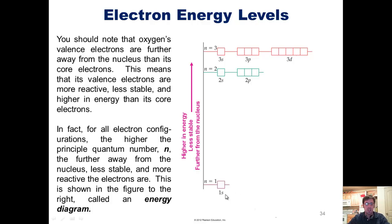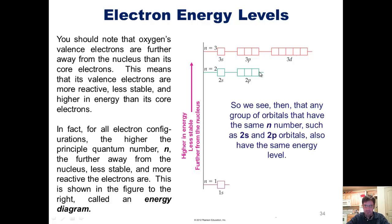So you can see this energy diagram portrays the most stable electrons, which are in the 1s orbital closest to the nucleus as being down here. We go higher energy, less stable, more reactive, in the 2s and 2p electrons shown up here. We can see, then, that any group of orbitals that have the same n number, such as 2s and 2p, also have the same energy level.